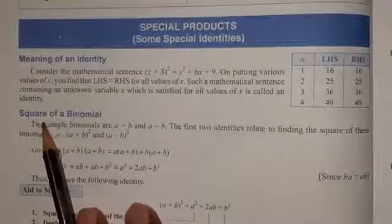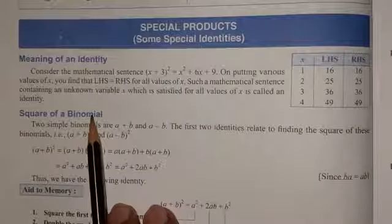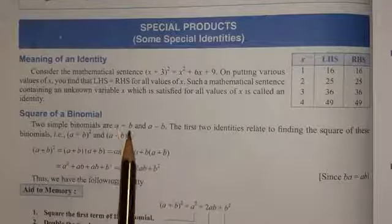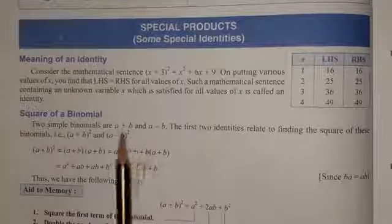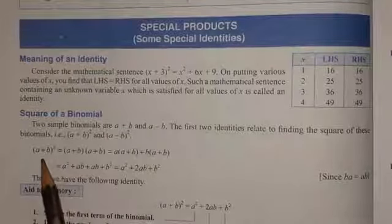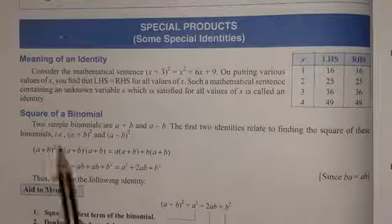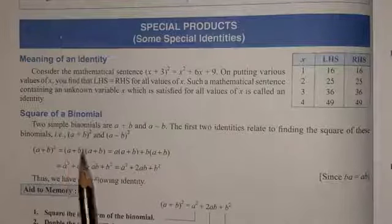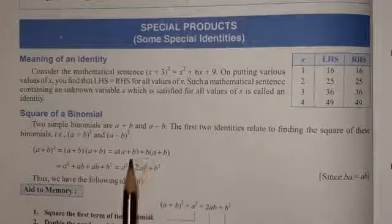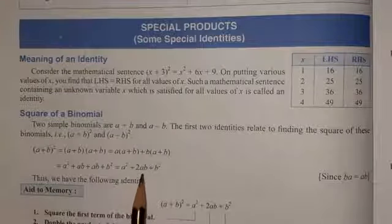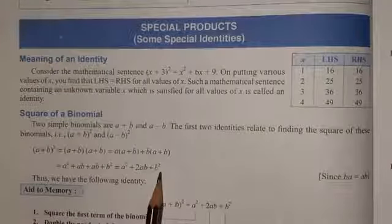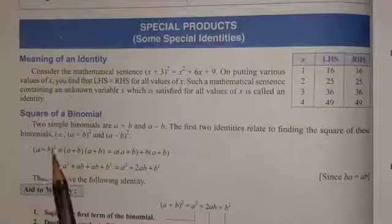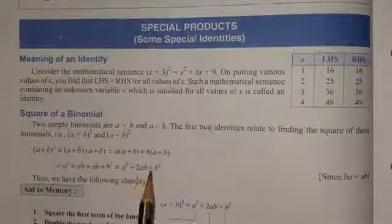अब हमारा पहला heading है — square of a binomial। Binomial are the expressions with two terms। अब हम देखेंगे कि जैसे a plus b या a minus b ये binomial है, जब इसका square किया जाता है तो हमको क्या मिलता है। At first, we are going to check about (a+b) square. (a+b) square means we will have to multiply the binomial a plus b into the same binomial a plus b, and then we will get a square plus 2ab plus b square.